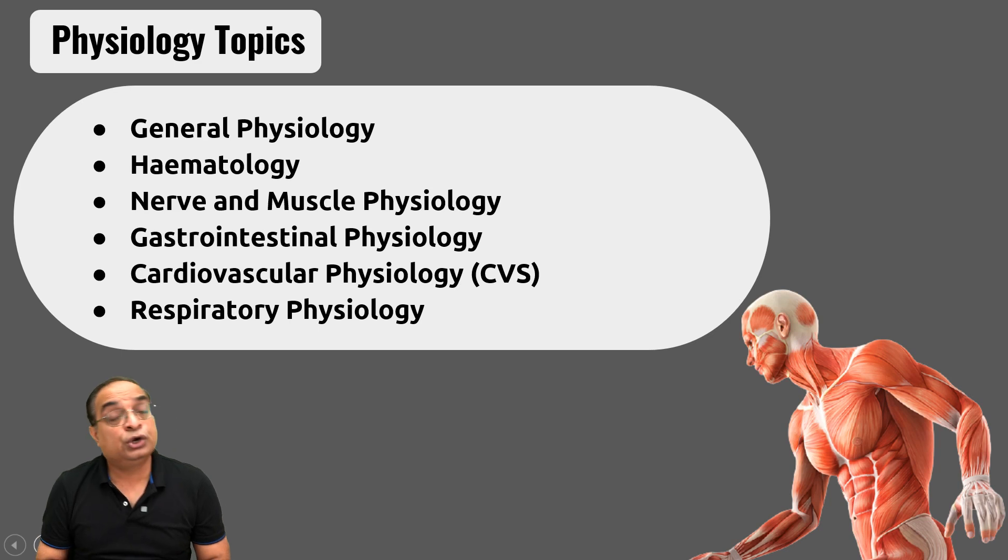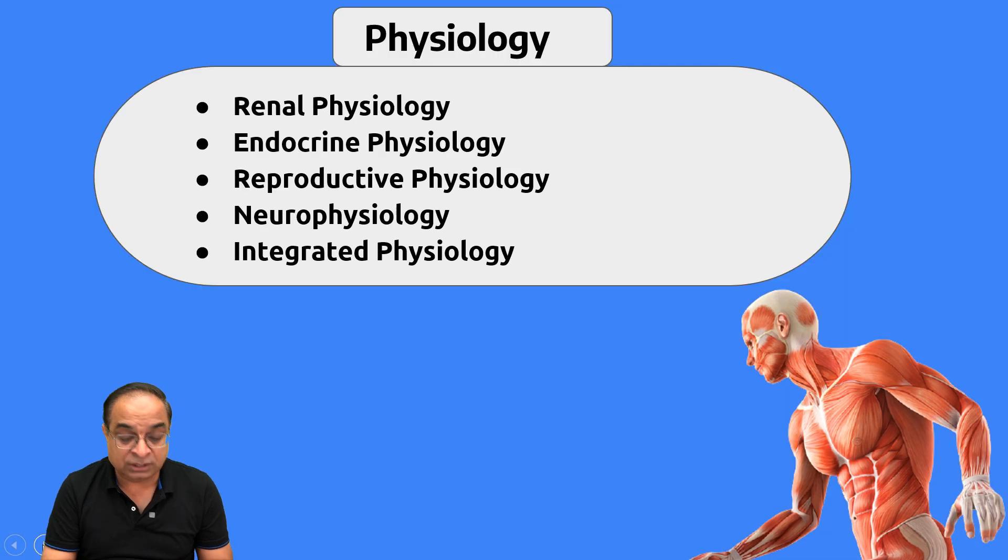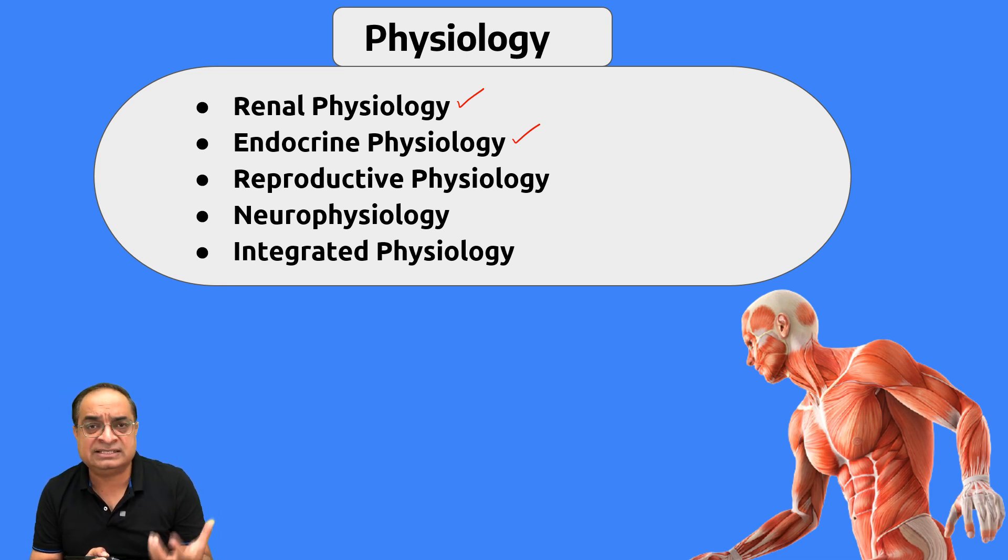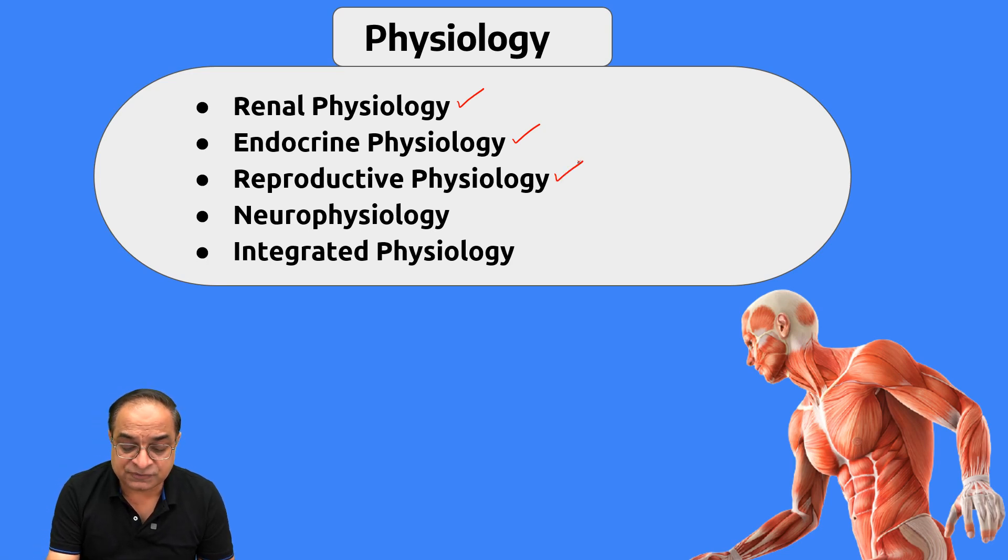Before going into the details of general physiology, let me first tell you what are the different topics in human physiology which you have to study. The first chapter is general physiology, which we'll be discussing in detail. Then hematology, that is about blood, nerve and muscle physiology, gastrointestinal physiology, cardiovascular physiology, respiratory physiology, renal physiology, endocrine physiology—that is about different endocrine glands of the body, their secretions, that is hormones, and what are the effects of hyposecretion of hormones, what are the consequences if a particular hormone is secreted in large amount, that is hypersecretion. Reproductive physiology—the basic anatomy of male and female reproductive systems, spermatogenesis, oogenesis, menstrual cycle, and then fertilization. Then neurophysiology—the central nervous system, the peripheral nervous system, and integrated physiology.